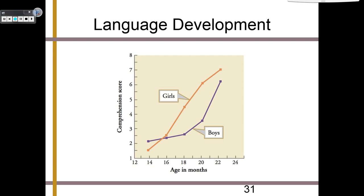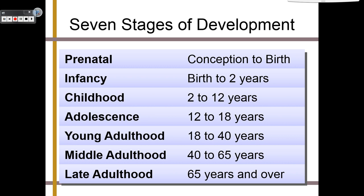Up until this point, we've been taking a chronological approach to understanding the stages of development — you were conceived, then you were born, and now you're a little kid. Going forward, instead of focusing on the seven stages of development, I want you to focus more on the theory. Each of these theories will be relevant at each of the seven stages of development, which are: prenatal, infancy, childhood, adolescence, young adulthood, middle adulthood, and late adulthood.